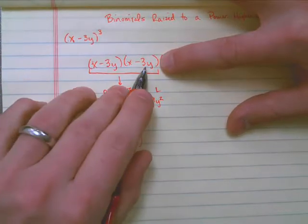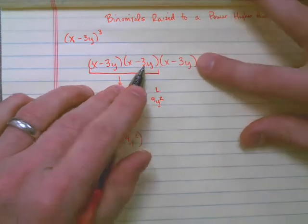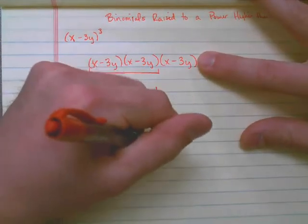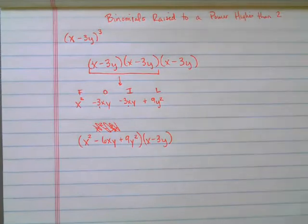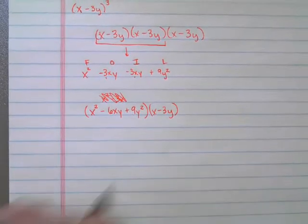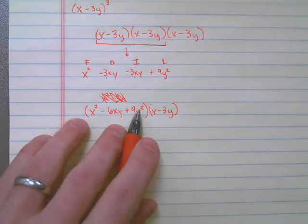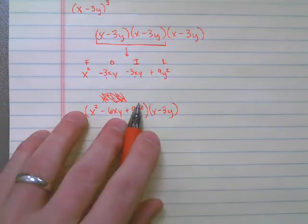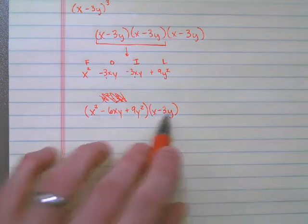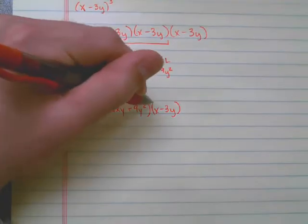Now I'm going to take those first two, and I need to multiply it one more time by this x minus 3y. To do this now, all we have to do is take the x and distribute it out to each term, take the negative 3y and distribute it out to each term. So you should have six terms total, three for the x and three for the 3y.